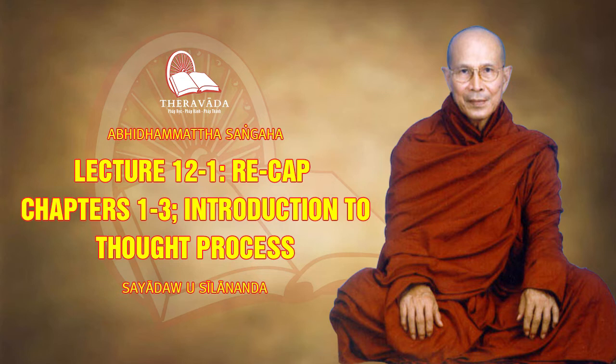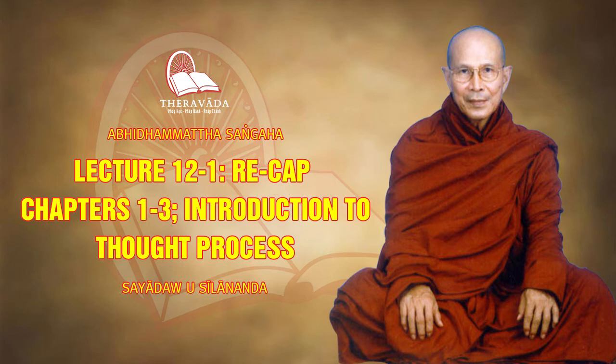These 19 beautiful universals arise with every type of beautiful consciousness — that means wholesome consciousness, some resultant consciousness, and functional consciousness. The next group is called abstinences: right speech means abstaining from wrong speech, right action means abstaining from wrong action, and right livelihood means abstaining from wrong livelihood. These three are called abstinences.